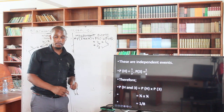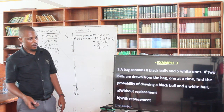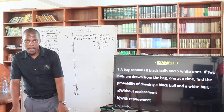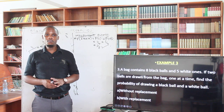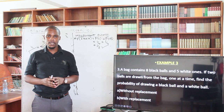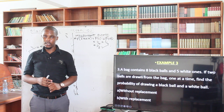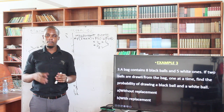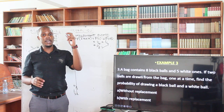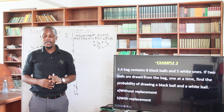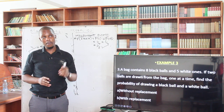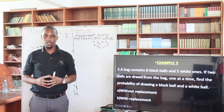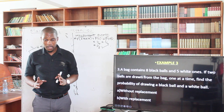This example concerned independent events. Now let's see one that combines independent events and mutually exclusive events. Example three: a bag contains eight black balls and five white ones. Two balls are drawn from the bag, one at a time. Find the probability of drawing a black ball and a white ball — first without replacement, then with replacement. Without replacement means you take the ball and do not return it. With replacement means you note the color and put it back, so it does not affect the total. If the examiner does not specify, you take it without replacement.